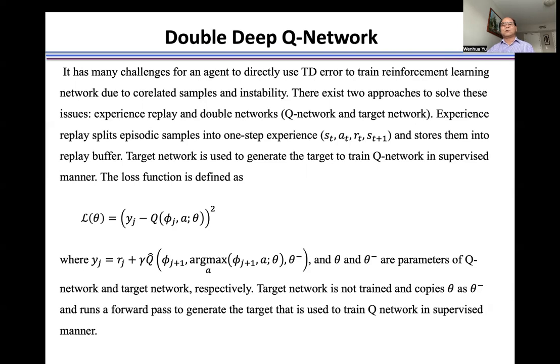Double Q-Network uses two networks: one is the Q-Network, another is the target network. We train the Q-Network. The target network is used to generate a target.